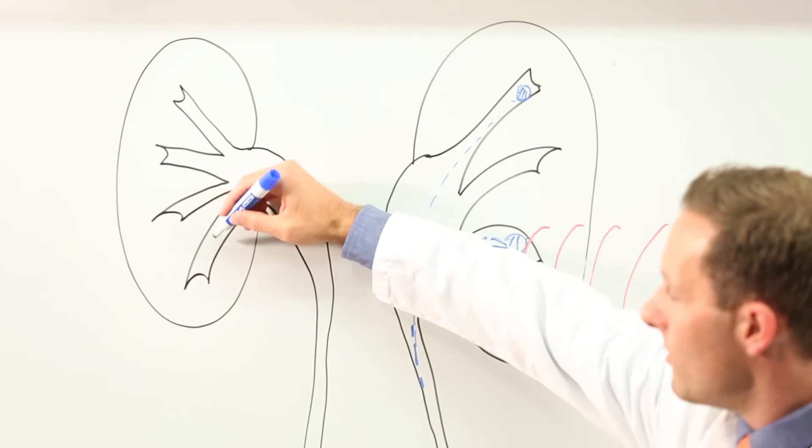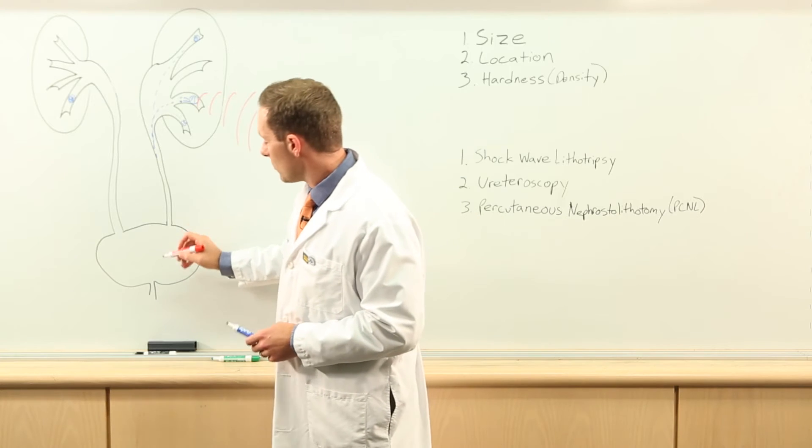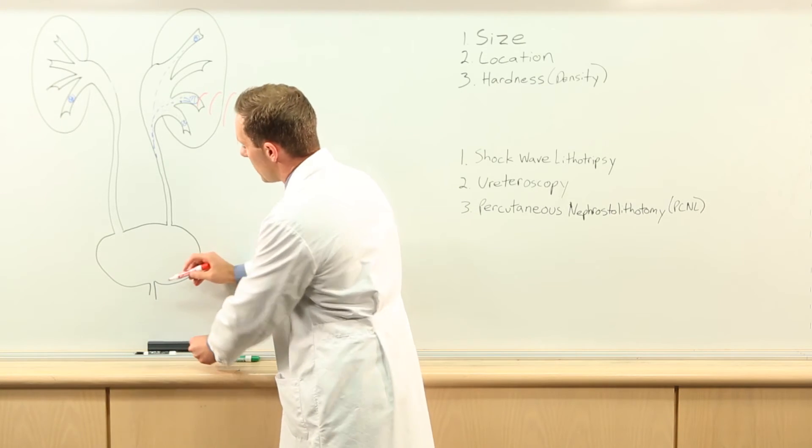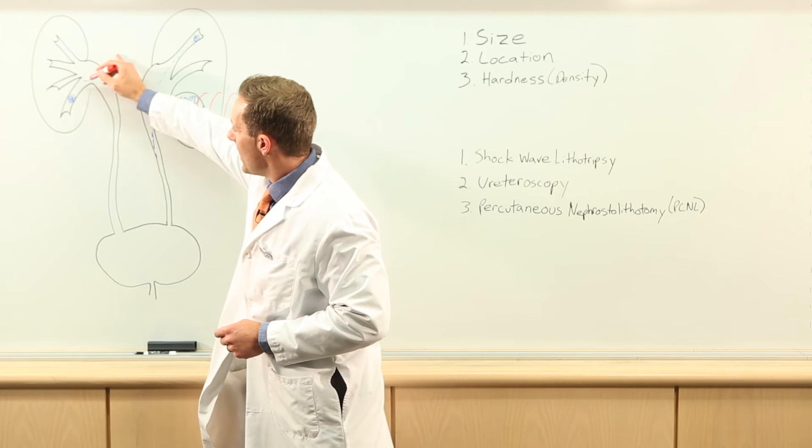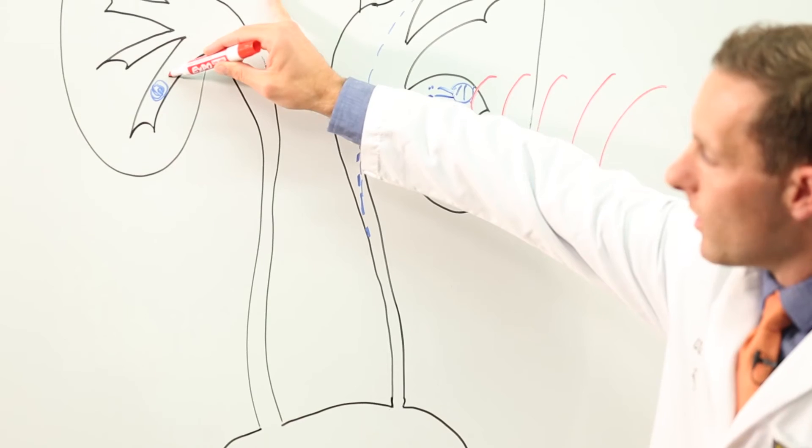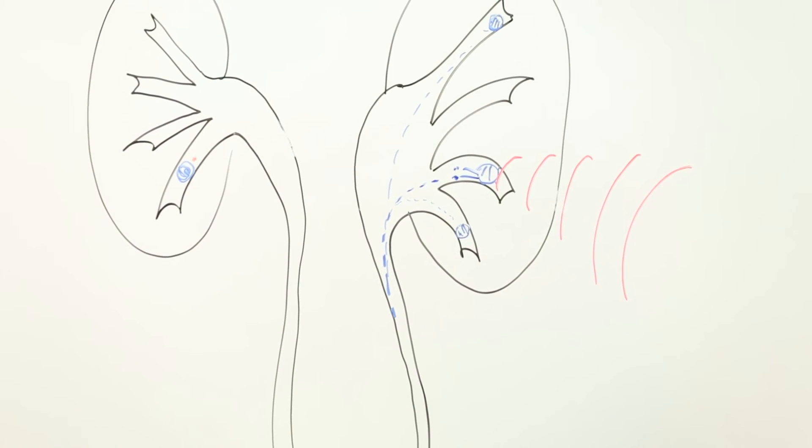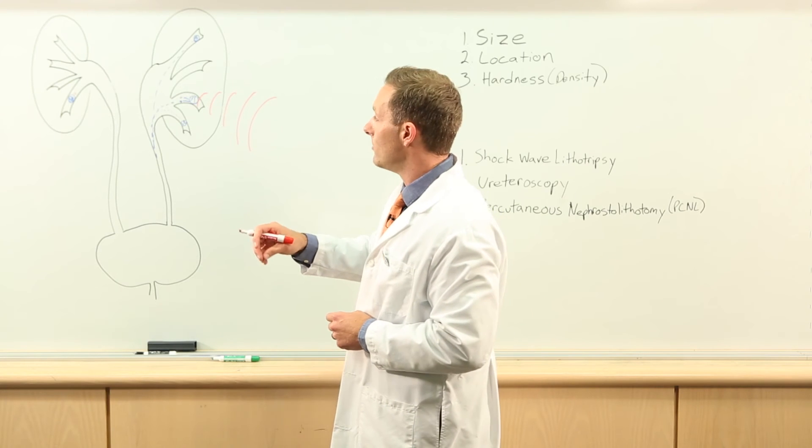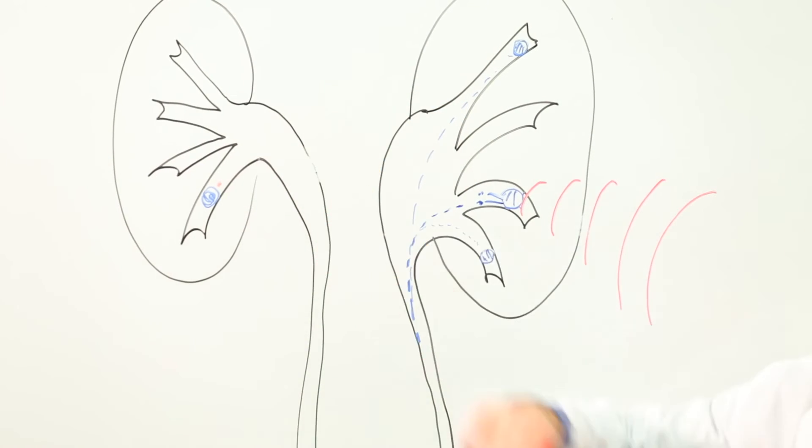Another type of treatment for kidney stones is what's called ureteroscopy. This is a procedure where your surgeon will pass a small scope through the urethra up the ureter and to the level of the stone where the stone can be broken up into small pieces using a laser. Those pieces can then either be removed with a small basket or made small enough to pass on their own.